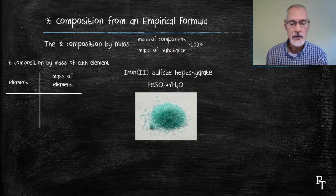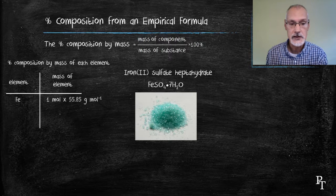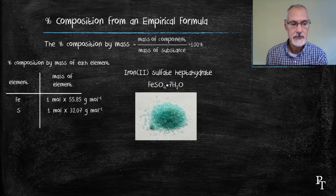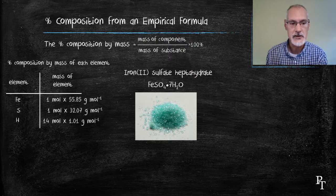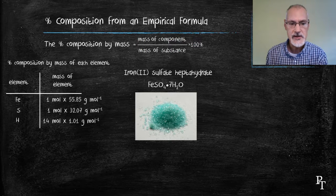I'm going to consider that I have one mole of this substance. And in it, there would be one mole of iron atoms, one mole of sulfur atoms, 14 moles of hydrogen. Remember, 7H2O would give me the 14.